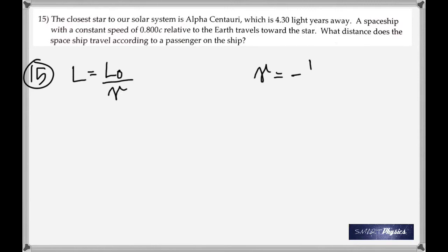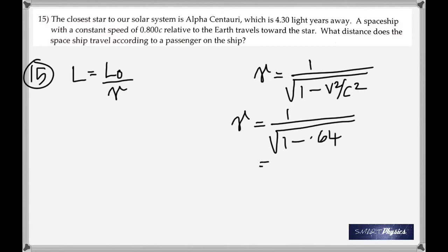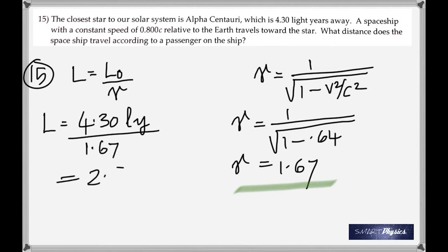So, distance, what distance does it appear to be? It's length contraction. We've got to find gamma. The speed is given, so find gamma first. Once you get gamma, put it back into that equation. Remember, it's in light-years, so the final answer will also be in light-years. It's 2.58 light-years.